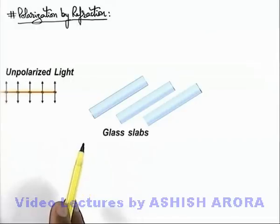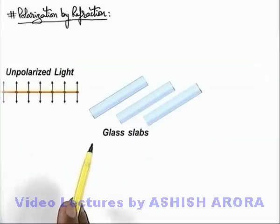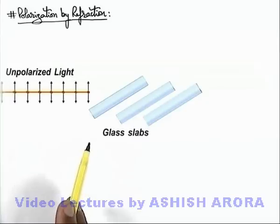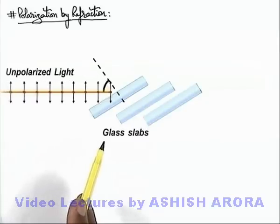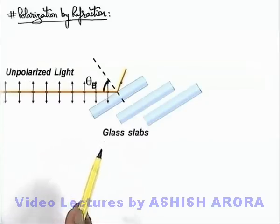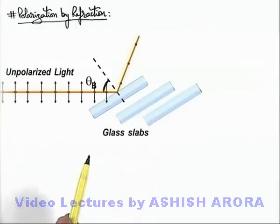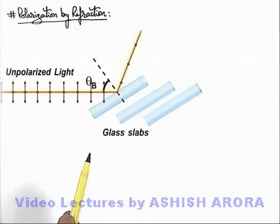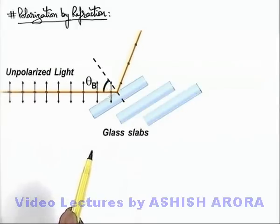The light is incident at Brewster's angle. We know that when light is incident on a surface at Brewster's angle, the reflected light is plane polarized, with the oscillation of the electric field perpendicular to the plane of incidence.